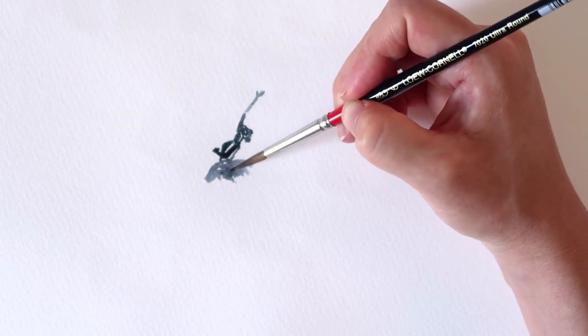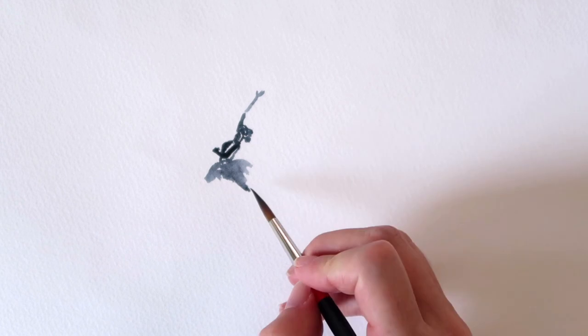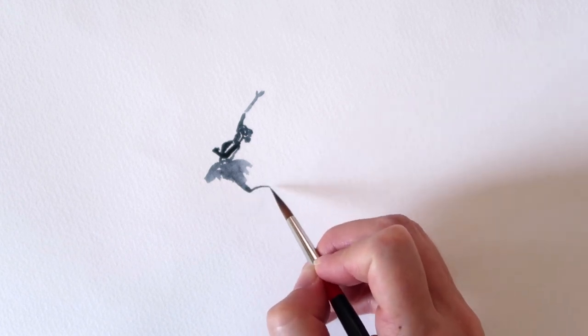Another place that I tend to skip and leave gaps is at joints. So elbows and wrists, hands, ankles, those kinds of areas. So you can kind of see me doing that here.